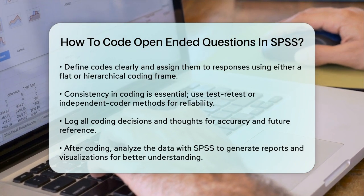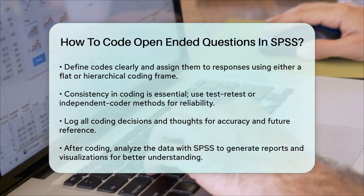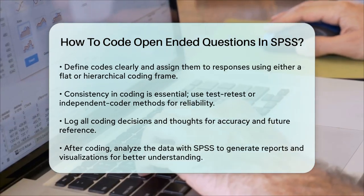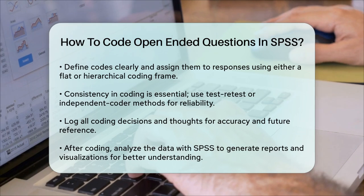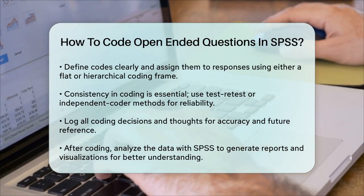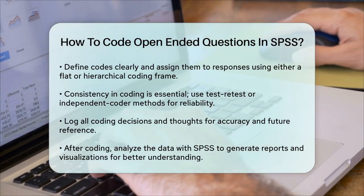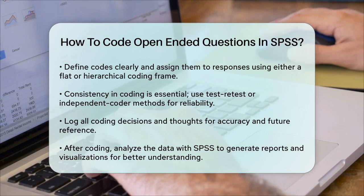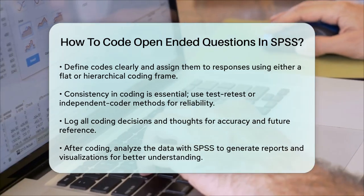Logging Decisions: To maintain accuracy, log all your decisions and thoughts during the coding process. This helps if you need to review or adjust your codes later, and ensures that your coding can be backed up with evidence.